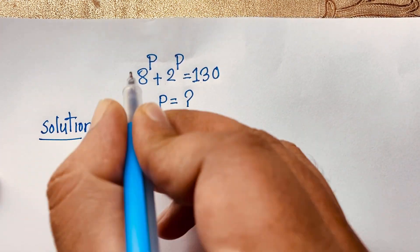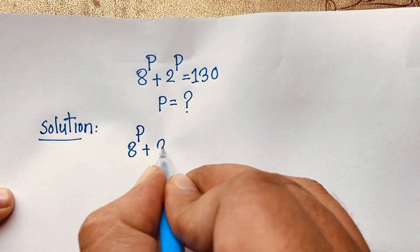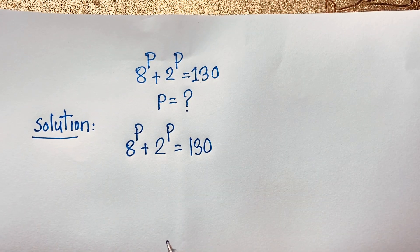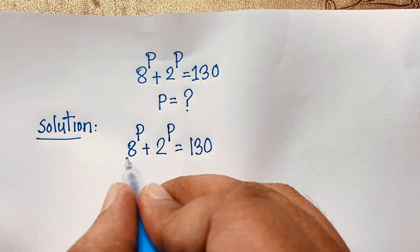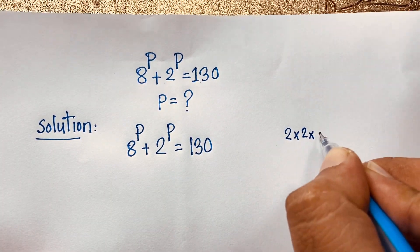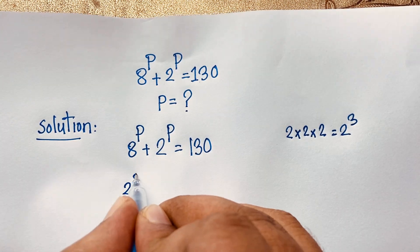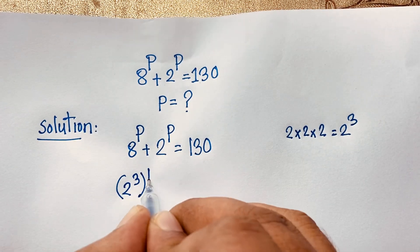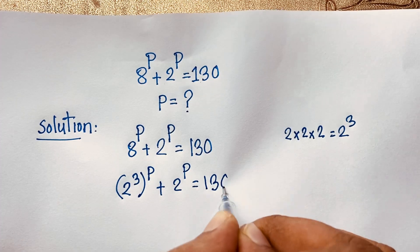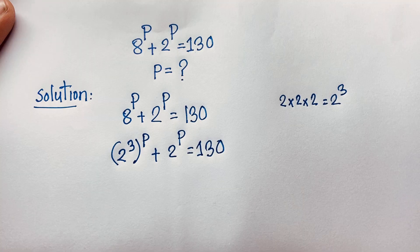Our question is 8 to the power p plus 2 to the power p is equal to 130. Here, 8 can be written as 2 times 2 times 2, which is 2 to the power 3. So I rewrite 8 as 2 to the power 3, with the whole bracket raised to the power p, plus 2 to the power p equals 130.